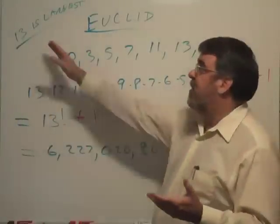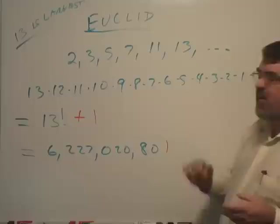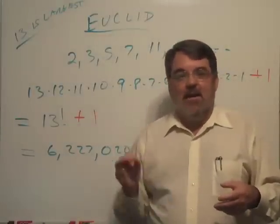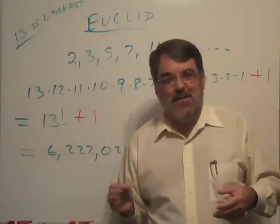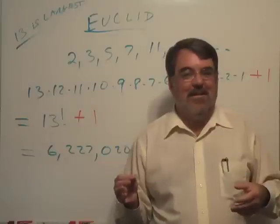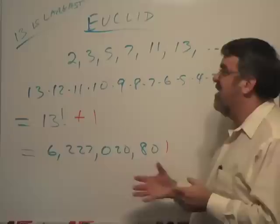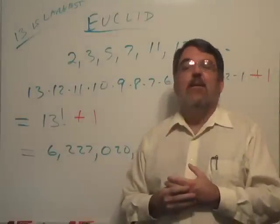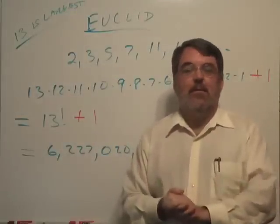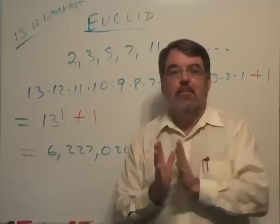So what did that show? That says, well, you know, if I assume 13 is the largest prime number, here's a number that I can guarantee contains a larger prime number if it's not prime itself. And so we've just created or found the existence of a larger prime number than the one we assumed was the largest.